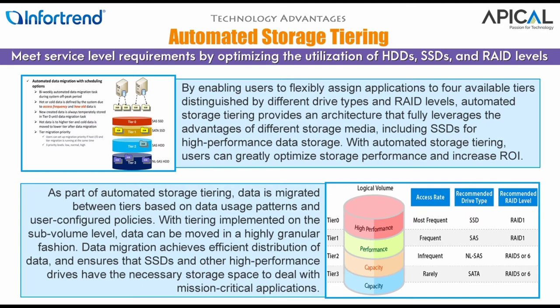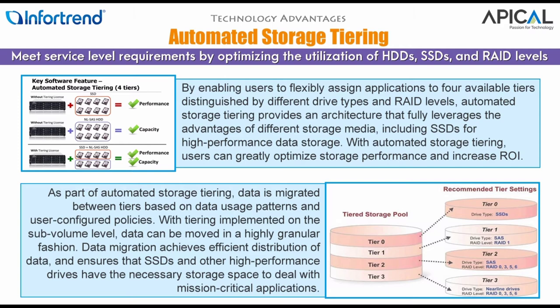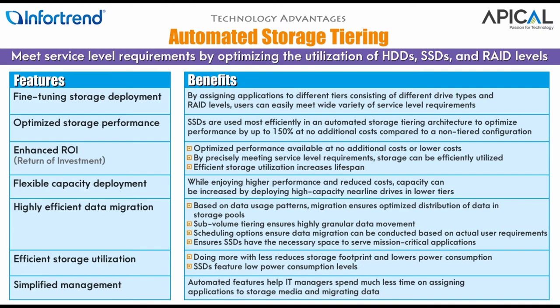As part of automated storage tiering, data is migrated between tiers based on data usage patterns and user-configured policies. With tiering implemented on a sub-volume level, data can be moved in a highly granular fashion. Data migration achieves efficient distribution of data and ensures that SSDs and other high-performance drives have the necessary storage space to deal with mission-critical applications.